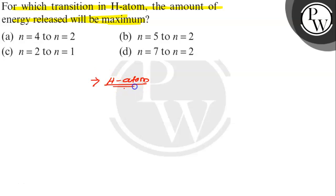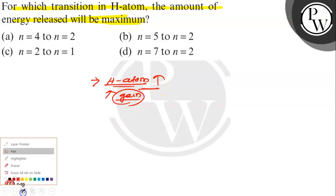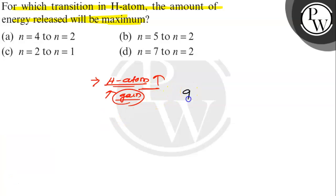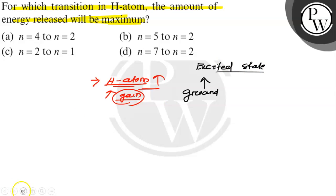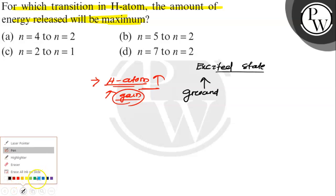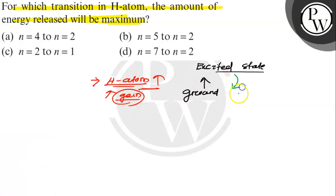When the H atom gains some energy, it will be excited and it jumps from the ground state to the excited state. After that, when it comes back from the excited state to the ground state, it will release some energy in the form of a photon.